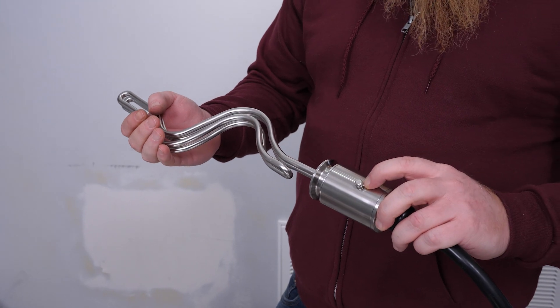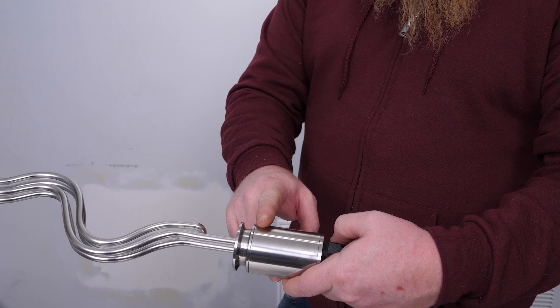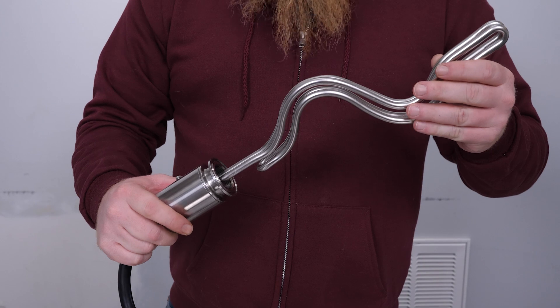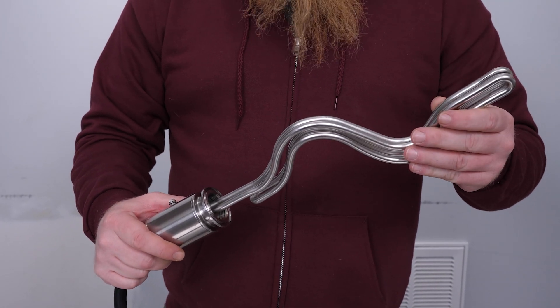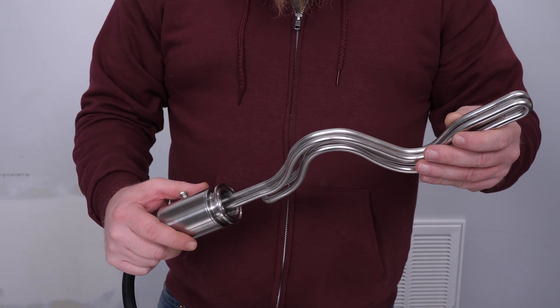When you install your heating element into your kettle, make sure the ground screw is facing down. You don't want that up on top where liquid could easily get spilled on it. That's a simple overview on installing your heating element into the Clawhammer heating element adapter.